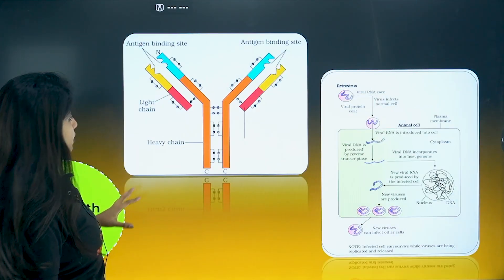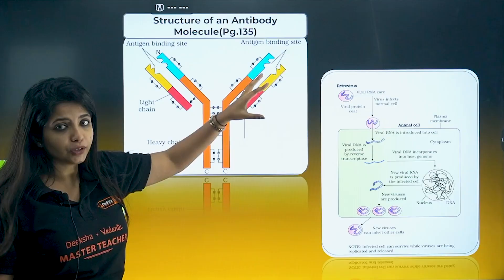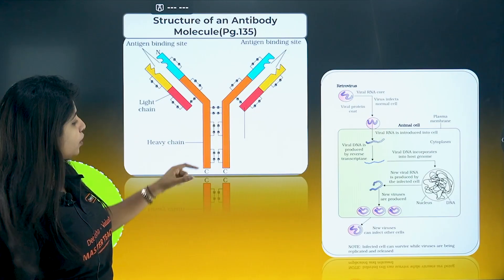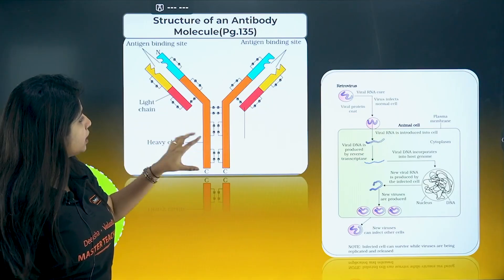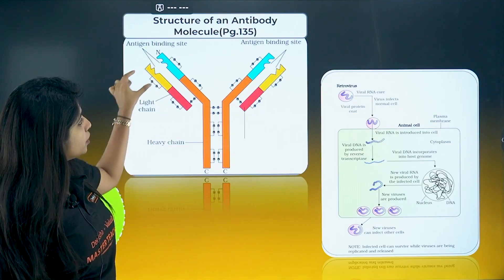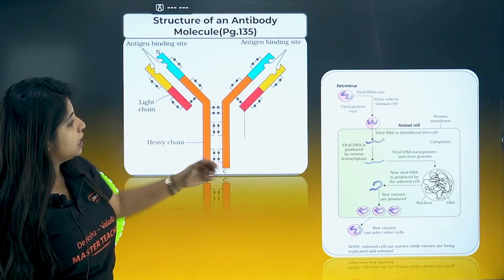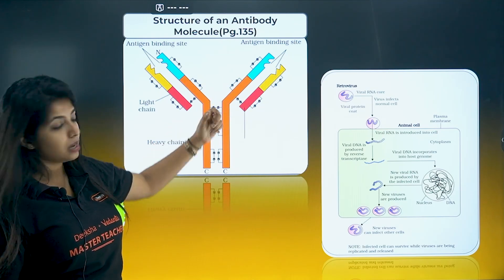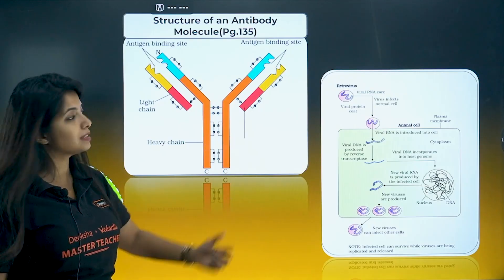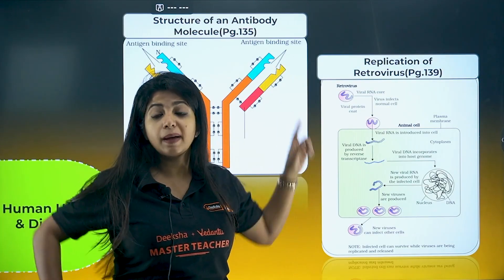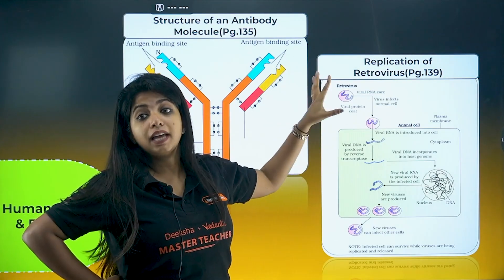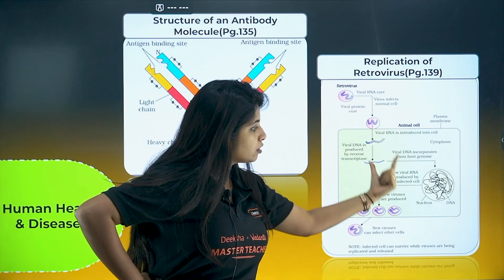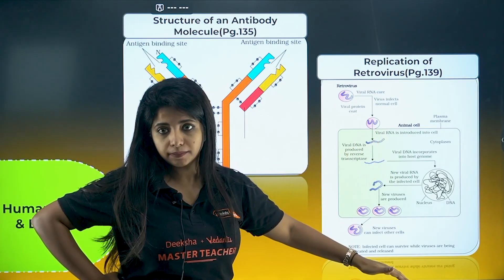In Human Health and Disease again, the structure of an antibody molecule is usually repeated in boards. Look for the heavy chain and the light chain. The variable region of heavy and light chain, and the constant region. They have disulfide bonds — fewer between heavy and light chains, but more between two heavy chains. Also, the schematic representation of a retrovirus — study the diagram and know the mode of action. It's on page number 139.